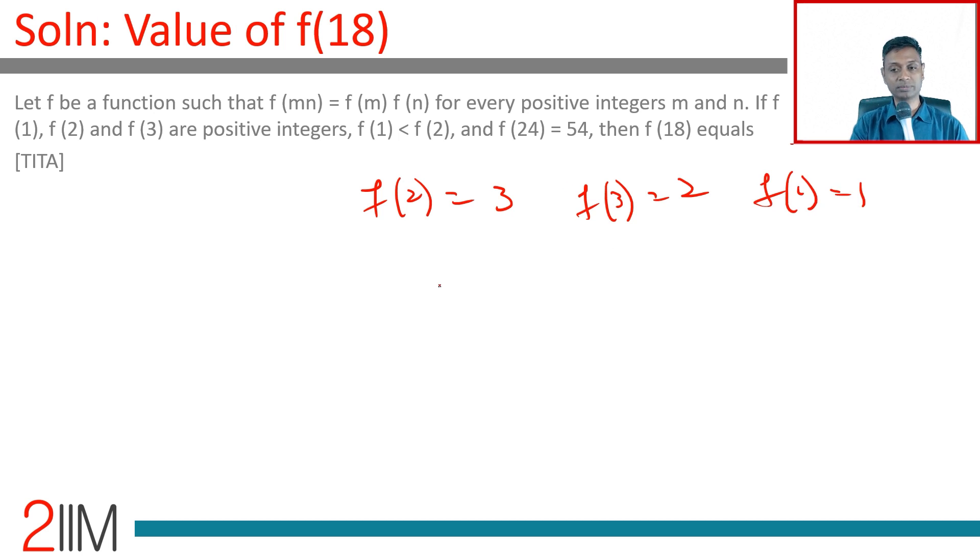f(1) is 1. f(18) equals f(2) into f(3) whole square, which is 2 into 3 into 3, which is 3 into 2 square, equals 12.